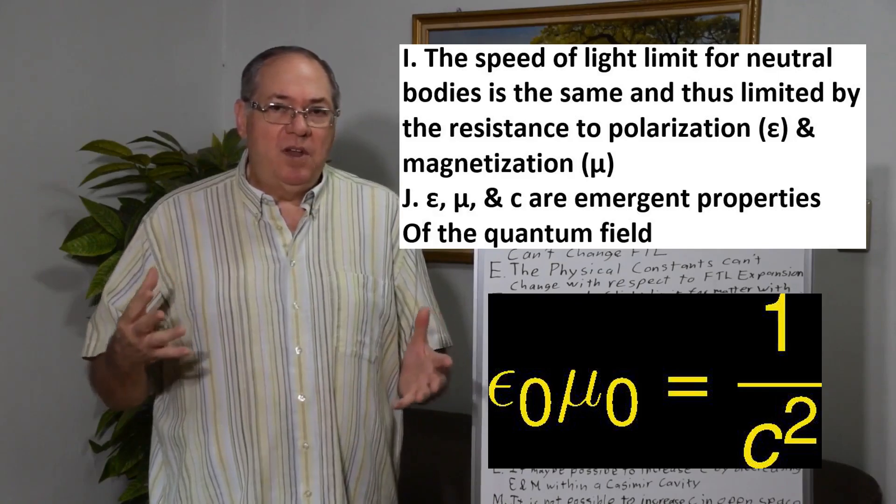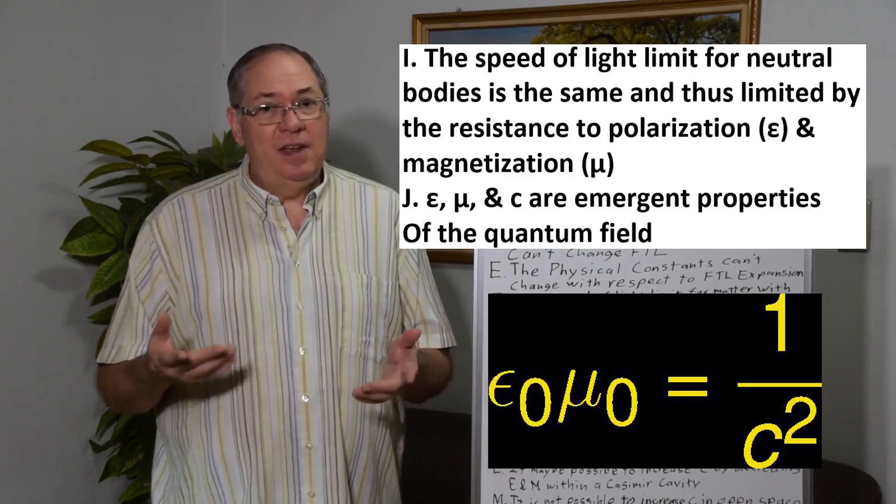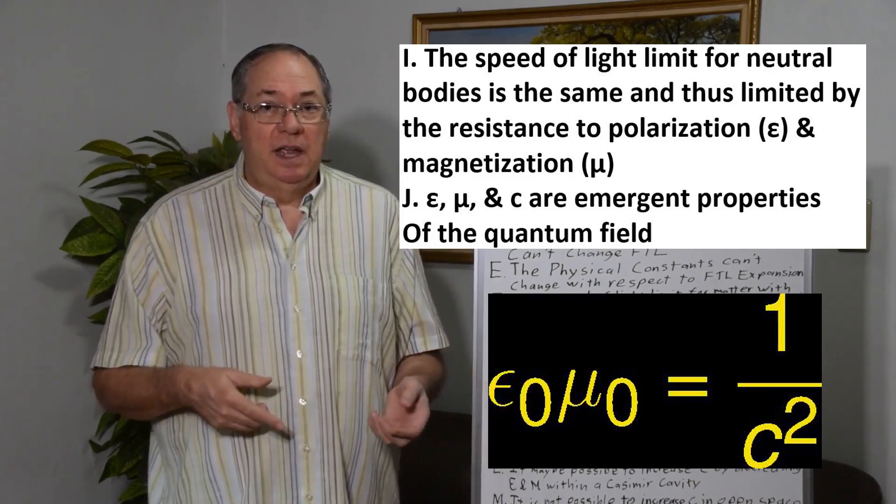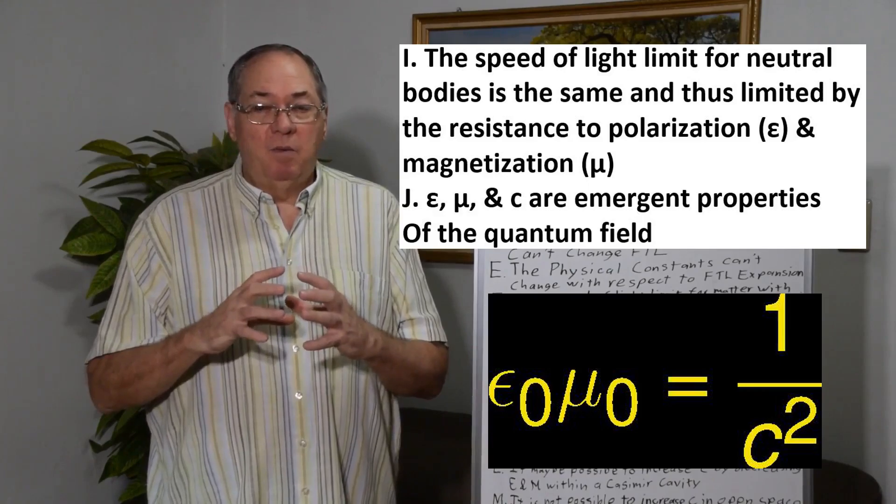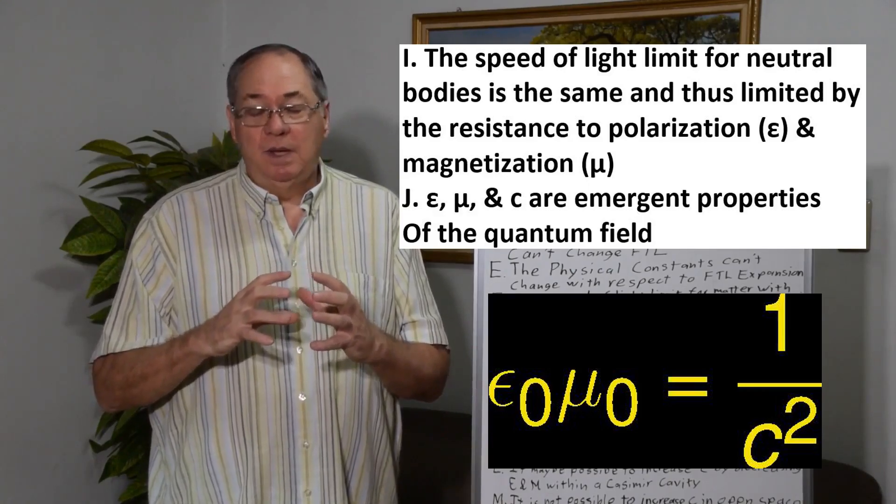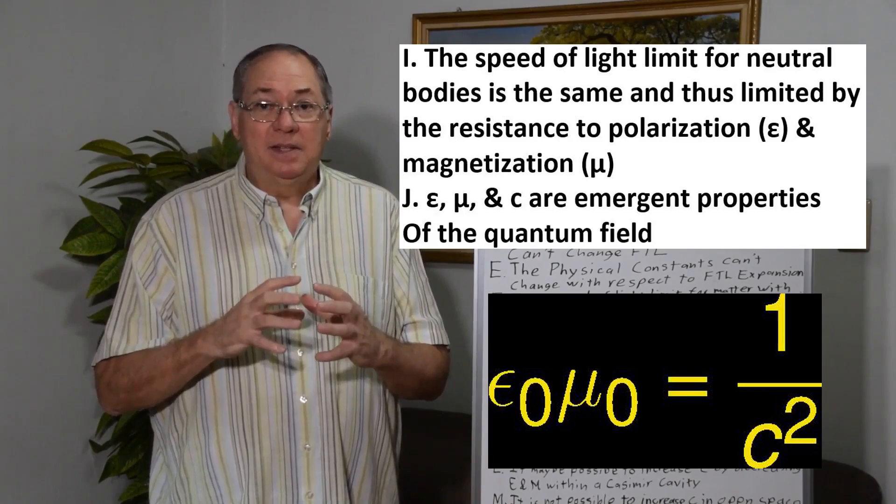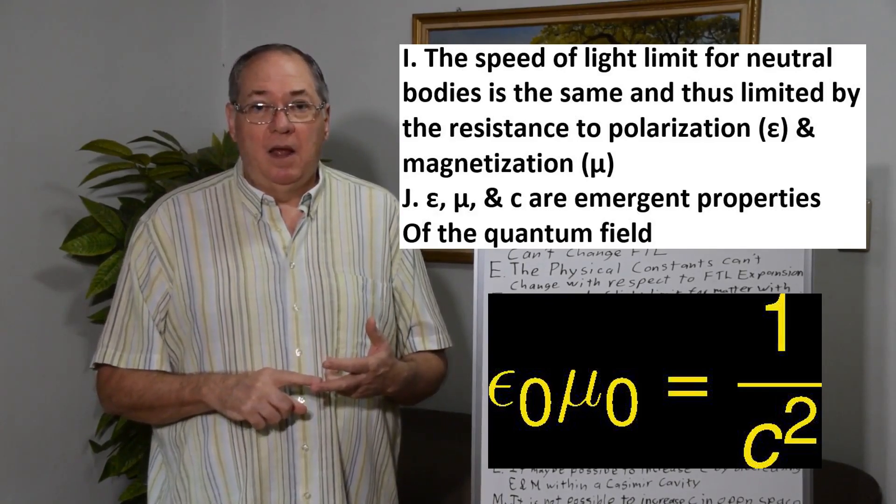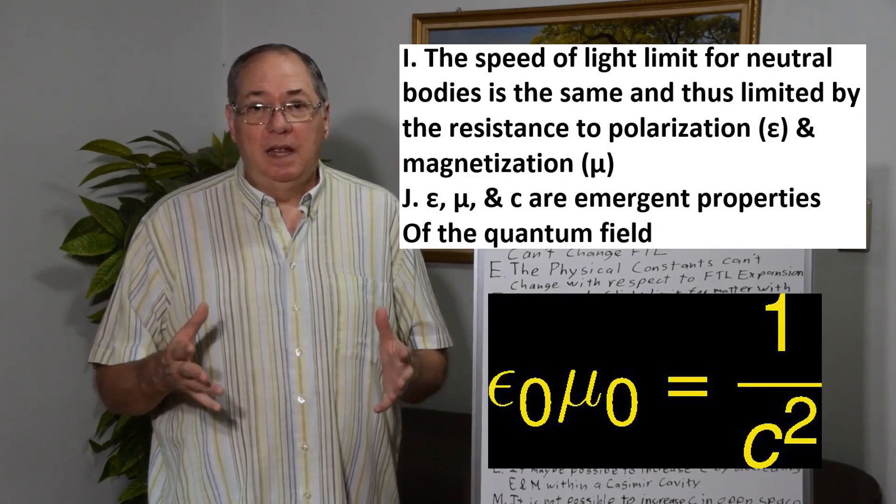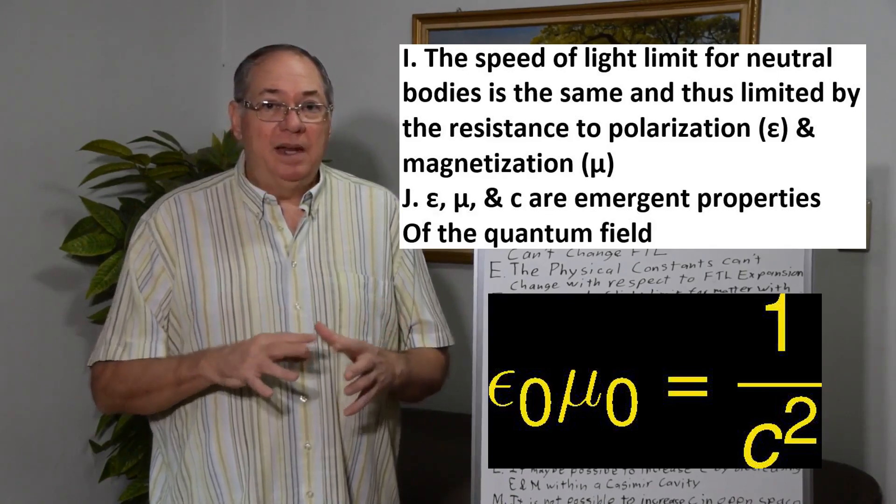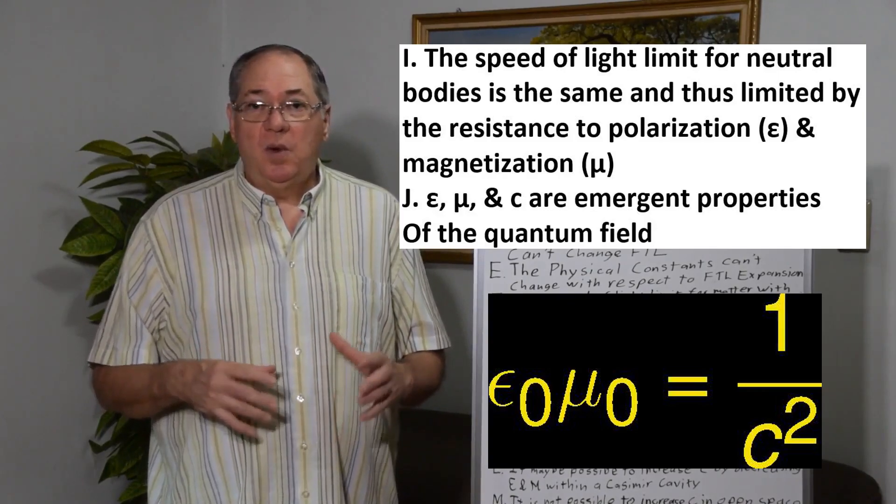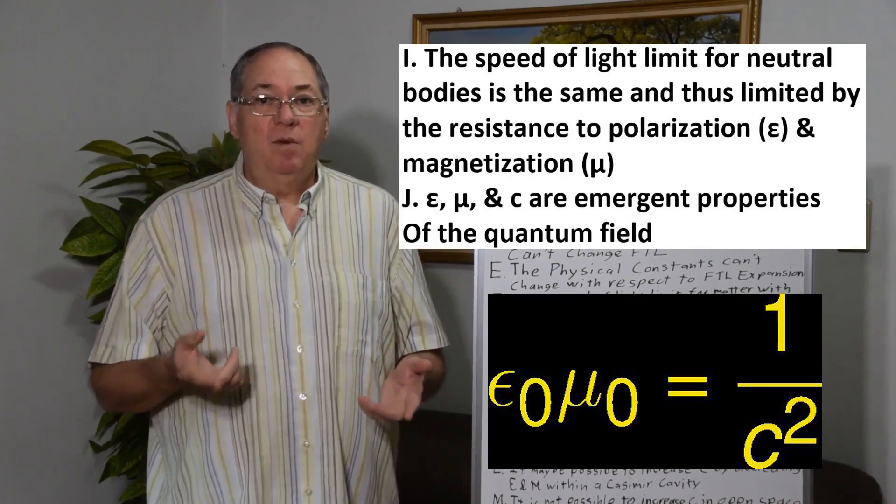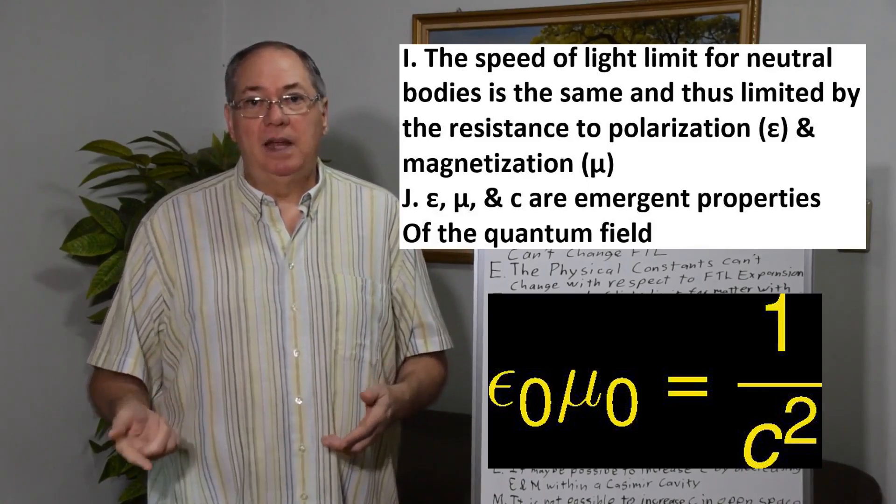So when you come to matter that's not charged, it still has the same speed of light limit as matter with a charge. And even a body, whether it's charged or neutral, plus or minus a few electrons, has the same mass. So mass and the speed of light limit are the same effectively, whether a body's charged or neutral. So it still comes down to the permittivity and permeability of the quantum field regulates the speed of light limit for neutral objects.